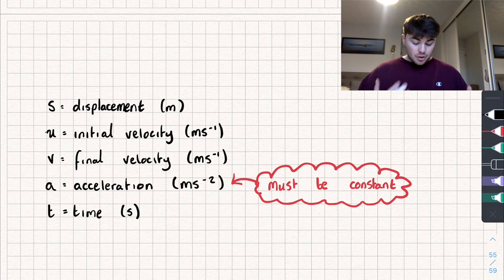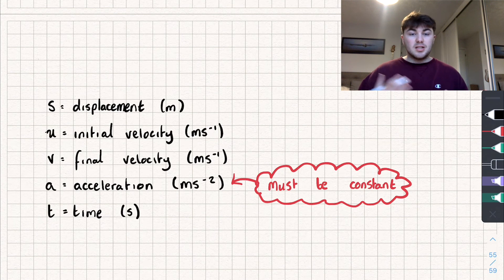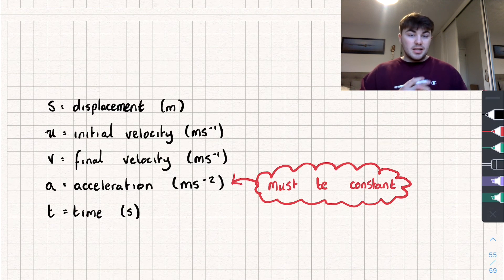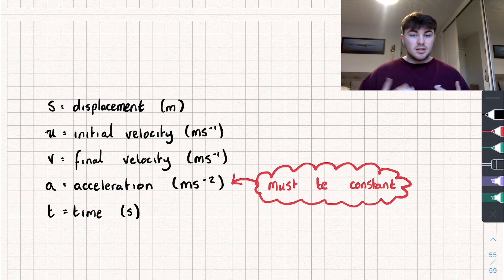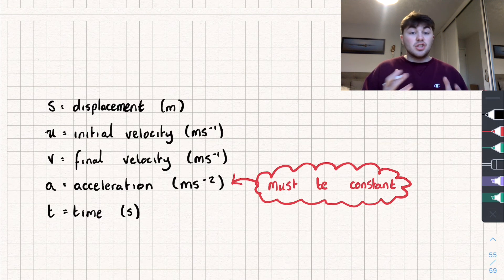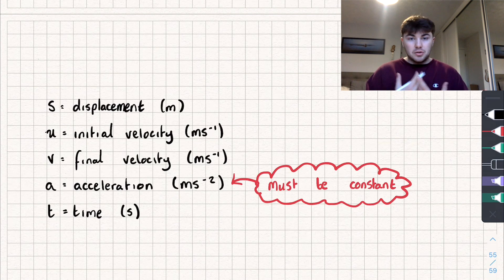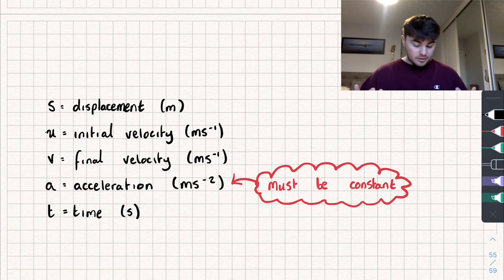U is our initial velocity, measured in meters per second. Initial velocity is how fast you're traveling as well as a direction, so it is also a vector quantity. Speed is a scalar — just a number — but velocity includes the direction you're going in, which is why it's a vector quantity.